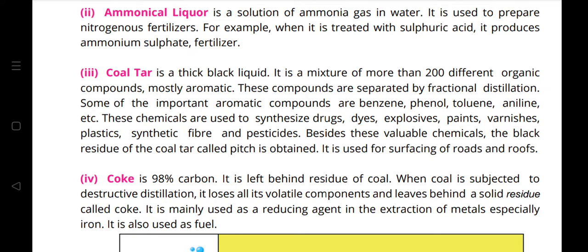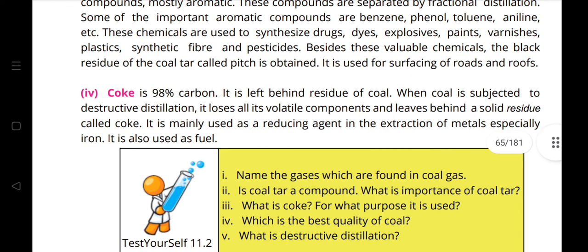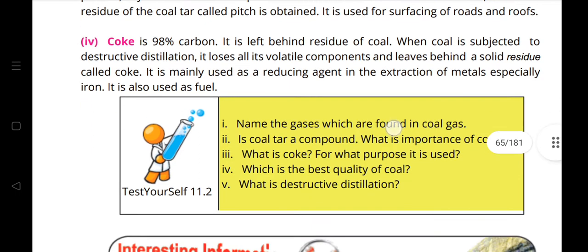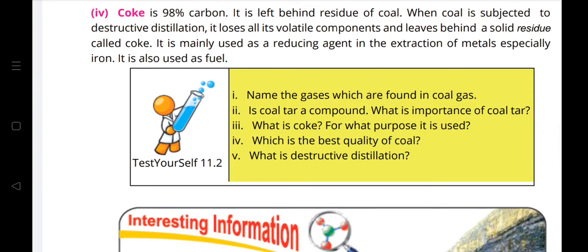The fourth product is coke, which is 90–98% carbon. It is the solid residue left behind when coal undergoes destructive distillation and loses all its volatile components. Coke is mainly used as a reducing agent in the extraction of metals, especially iron, and is also used as fuel.